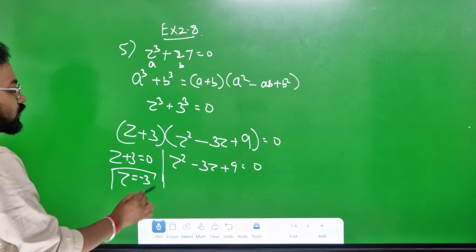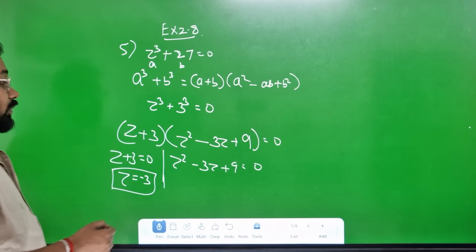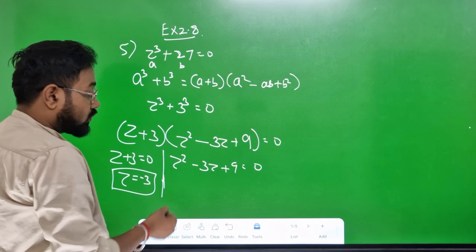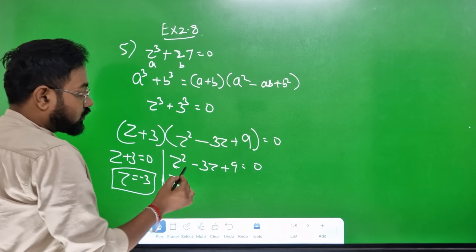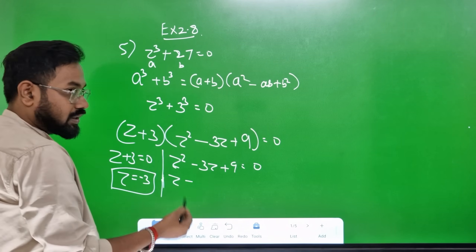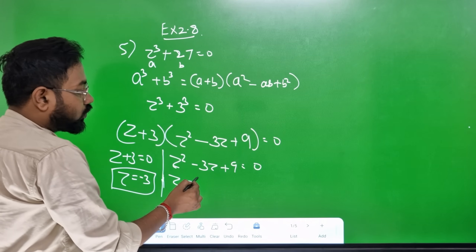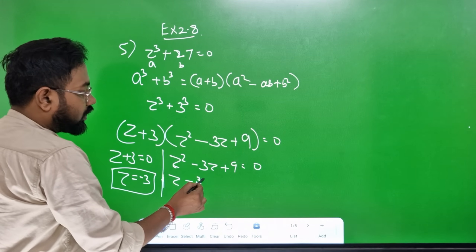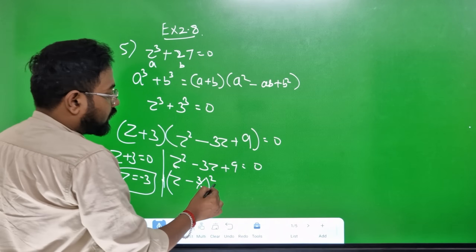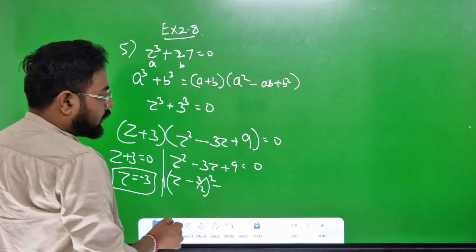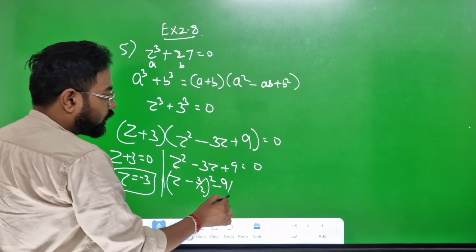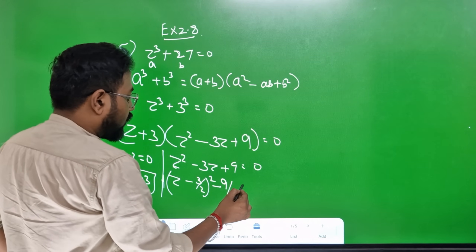Now we use the square method — completing the square. z² minus 3z. Minus and minus gives plus, plus and plus. What number is divided by 2? That's the coefficient. So 3 by 2, whole square. That's the minus.